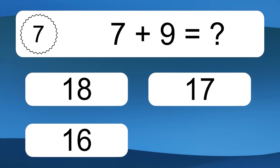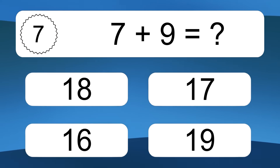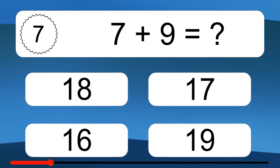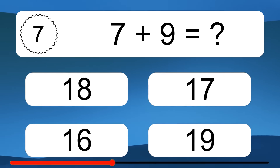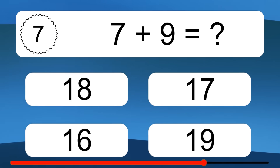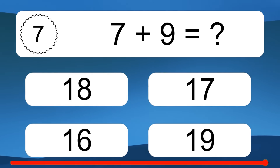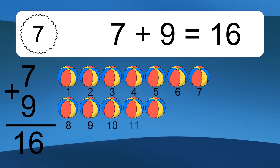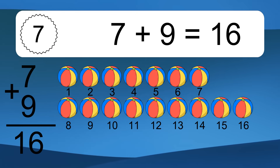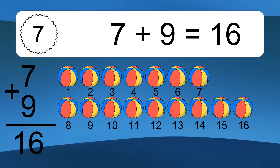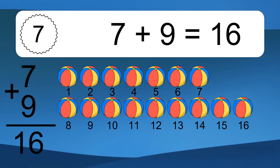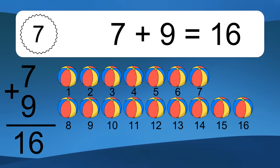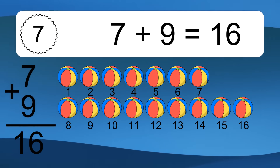7 plus 9 equals what? 7 plus 9 equals 16. Let's count it: 1, 2, 3, 4, 5, 6, 7, 8, 9, 10, 11, 12, 13, 14, 15, 16.